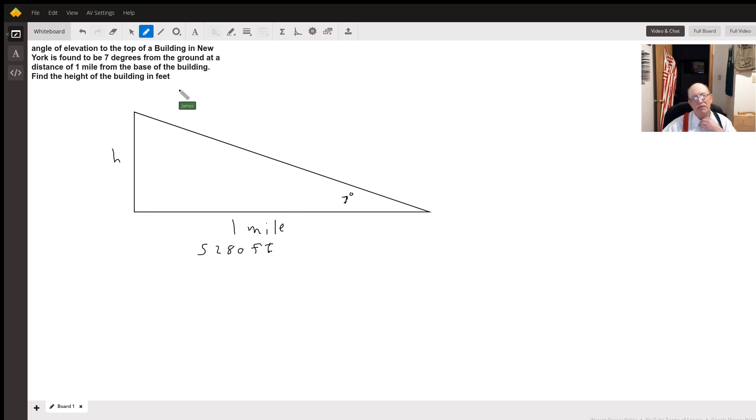Since they want the height of the building in feet, we're going to have to change one mile to 5,280 feet. And we're trying to find H.